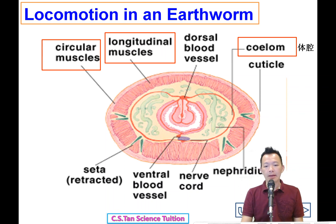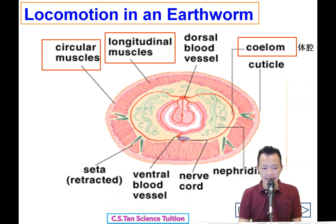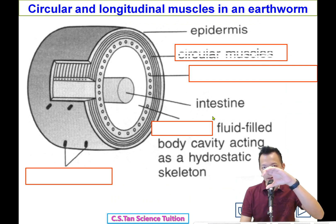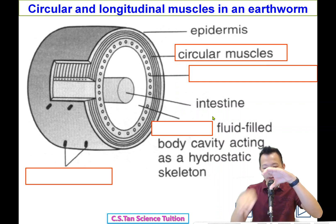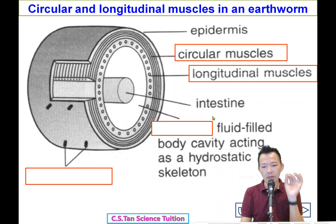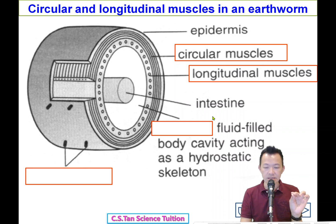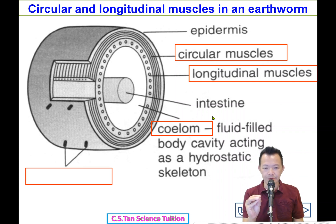So to summarize: the earthworm has two layers of muscle — circular muscle and longitudinal muscle. Under these two layers of muscle, it contains a space filled with fluid. On the outer surface of the earthworm's body, there are many very small structures.